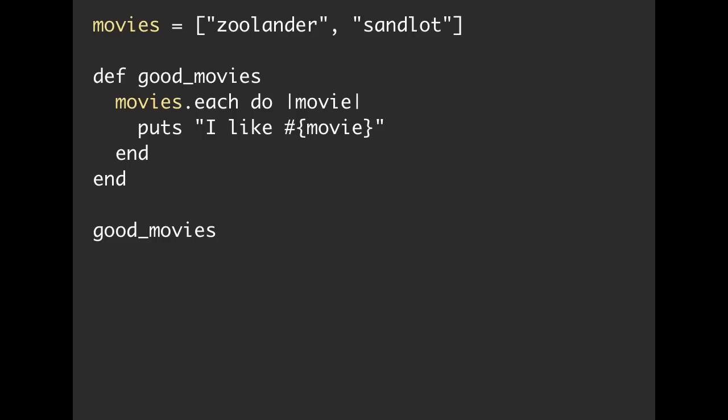Here we have an example of setting a variable called movies to an array of strings. So the first string is Zoolander, the second string is Sandlot. Then we have our method definition of good movies. And inside of that we are using movies.each which is the each method on the array movies. And for each of those we are putting I like and then the string of movie.